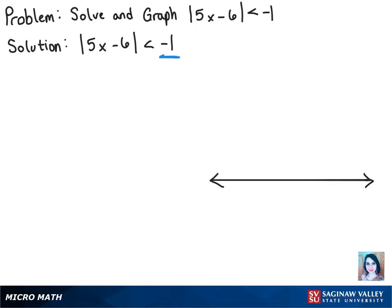So the answer for this is that there is no solution, since it's never possible to have the absolute value of anything be negative, let alone less than negative 1. Here's the solution: no solution, and we leave the graph empty.